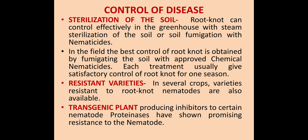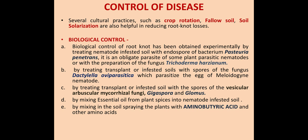Growing resistant varieties is also an important way to control the disease. Another way is using transgenic plants, which produce inhibitors to certain nematode proteinases and have shown promising resistance to nematodes. Several cultural practices such as crop rotation, fallow soil, and soil solarization are also helpful in reducing root knot losses.